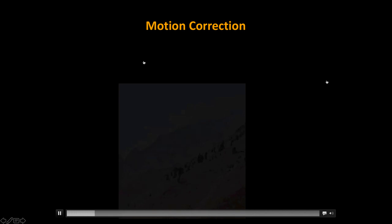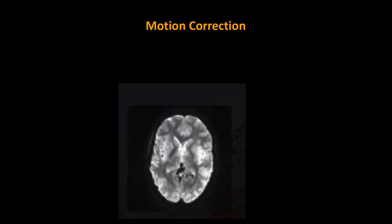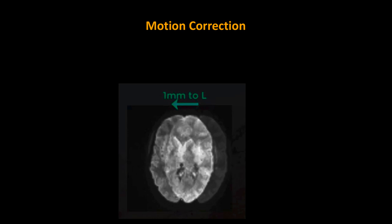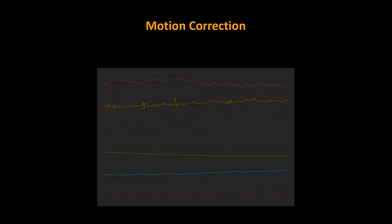Motion correction is pretty simple: if the subject moves left-right, forward-back, or up-down, we simply invert that to cancel out the effect. We need a reference slice to compare to — if they move one millimeter to the right compared to the reference, we move it back one millimeter to the left. When we do motion correction, you'll see plots in the CONN GUI. Traditionally there are six motion parameters: three translations along X, Y, Z and three rotations around those axes.